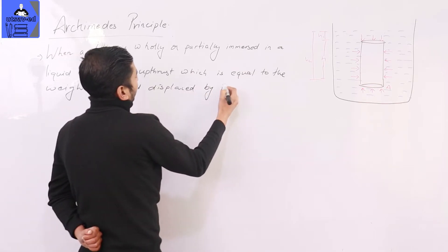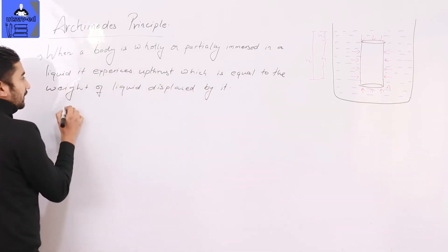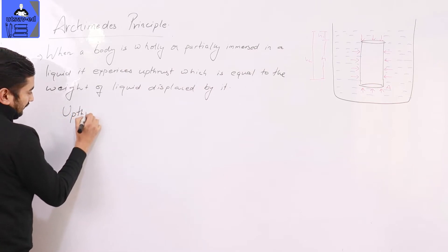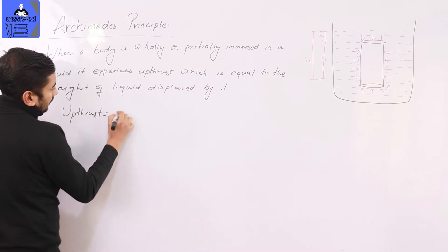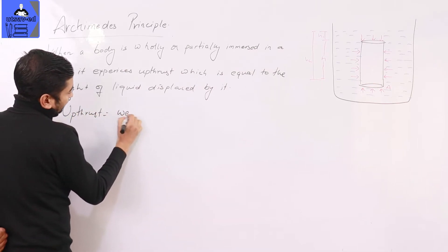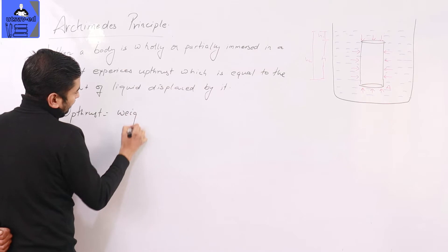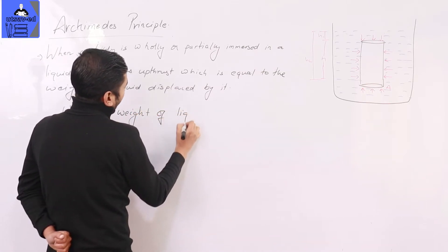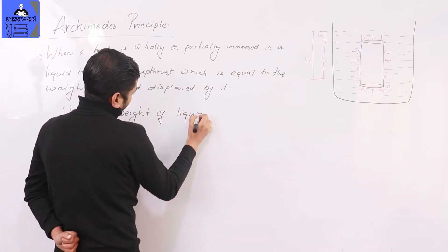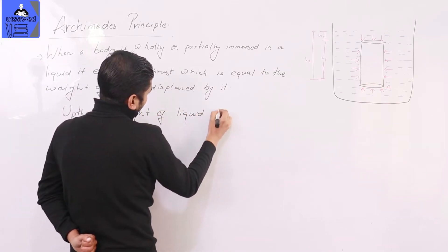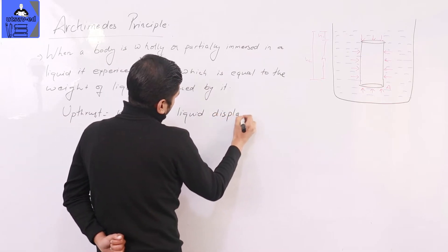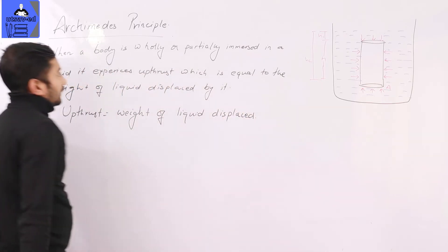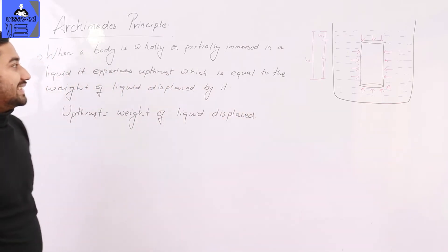By it. The upthrust is equal to the weight of the liquid displaced by it. This is the statement of Archimedes' Principle.